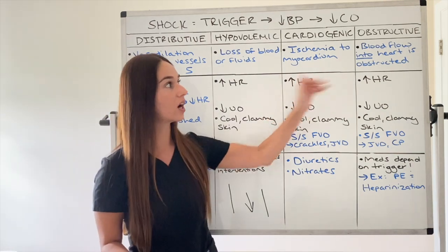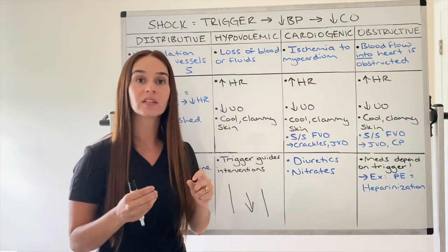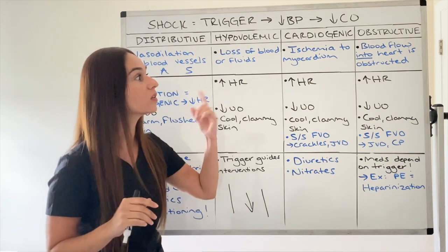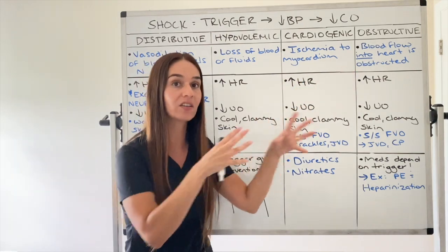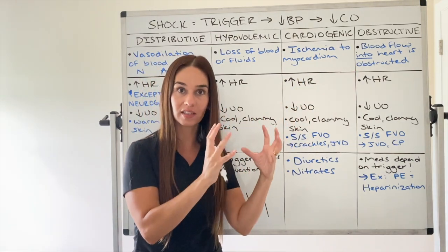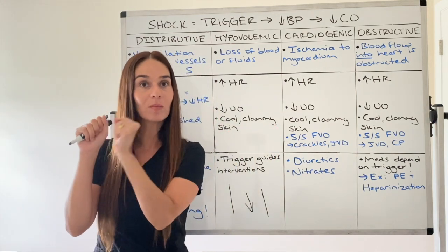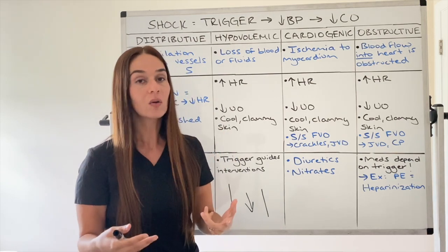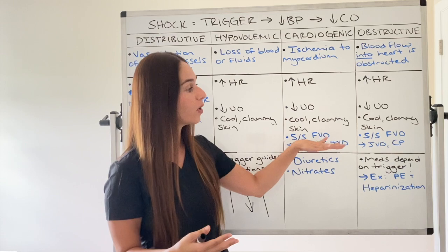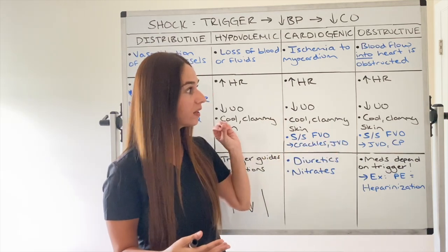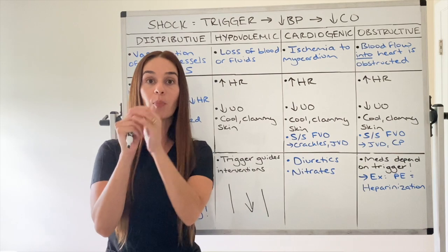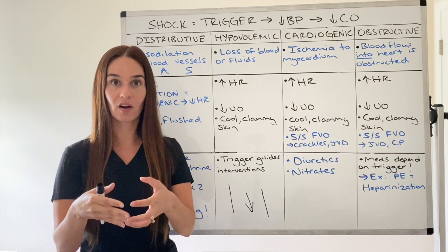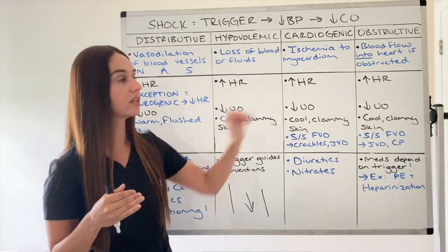With obstructive shock, think of something that is blocking blood flow to the heart — an obstruction of blood flow into the heart. The heart muscle itself is not damaged, but something is blocking blood from being perfused to the heart, which can eventually result in the heart getting damaged. The example I'll use is a pulmonary embolism, where a clot can block blood flow into the heart. Those are the four categories of shock.